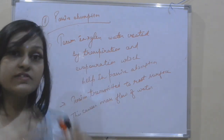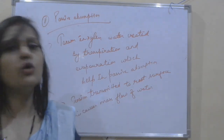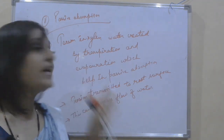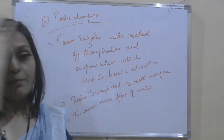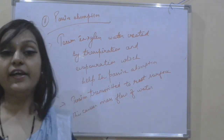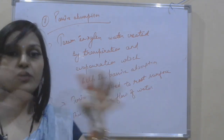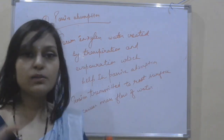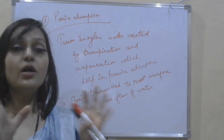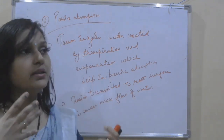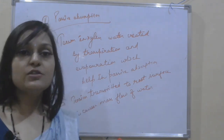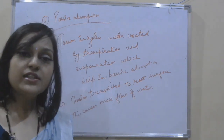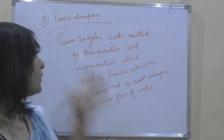The tension created in the xylem causes the xylem to absorb more water. Evaporation and transpiration help in passive absorption. Tension is created in the xylem, which is transferred to the roots. The roots will absorb more water to compensate for the water lost through transpiration and evaporation, in order to keep the plants alive. The roots absorb more water with the help of root hairs, and the tension created in the xylem drives this passive absorption process.